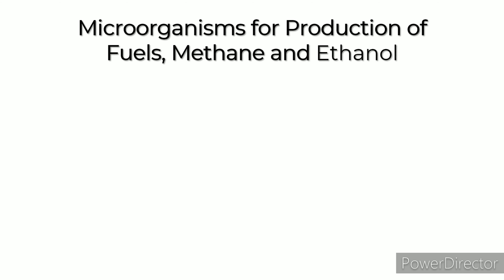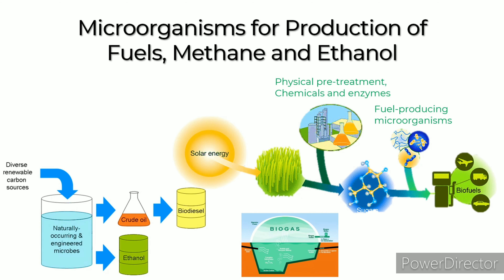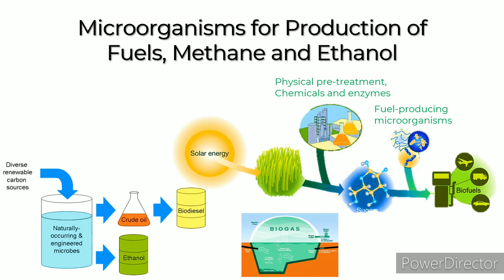Microorganisms are used for the production of fuels including methane, ethanol, biogas, and biodiesel. Diagrams show how these fuels are produced using microorganisms. Insulin production uses recombinant DNA technology, a method scientists developed to insert a human gene into the genetic material of a common bacterium.